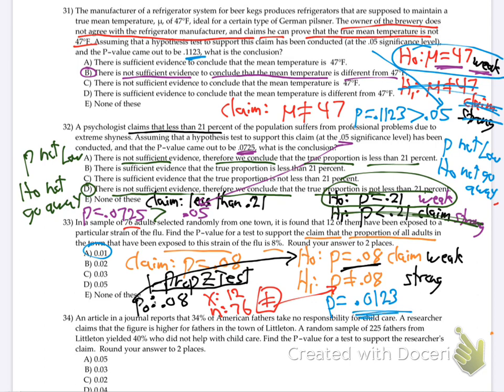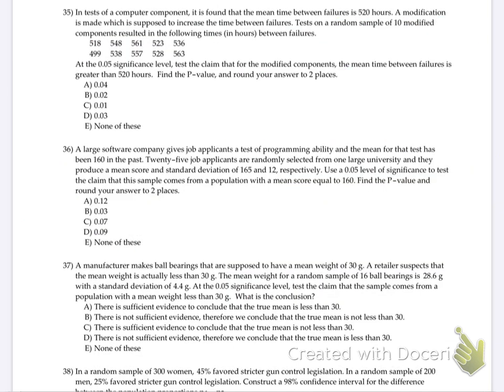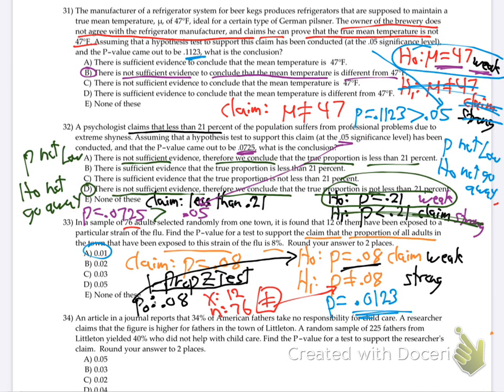Number 34. An article in a journal reports that 34% of American fathers take no responsibility for child care. A researcher claims that the figure is higher for fathers in the town of Littleton. A random sample of 225 fathers from Littleton yielded 40% who did not help with child care. Find a p-value for a test to support the researcher's claim, round to two places.